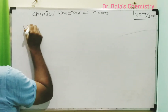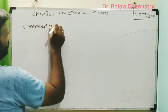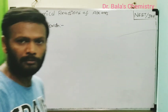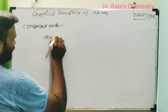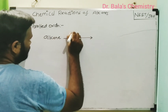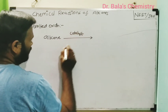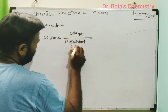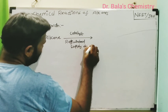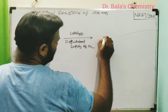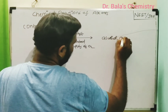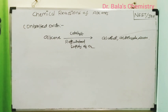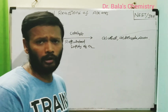The next topic is controlled oxidation. In controlled oxidation, oxygen is supplied in a regulated manner using a catalyst. Based on the conditions, different products will come out. Changing the conditions changes the products.